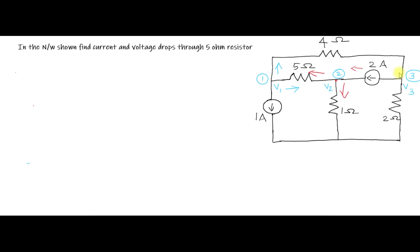Next, analyze Node 3. The elements coming to Node 3 are this 4 ohm, this 2 ohm, and this 2 ampere current source. Here also I am assuming current as leaving from Node 3. For Node 3, write V3 divided by 2, because this element is V3 over 2.